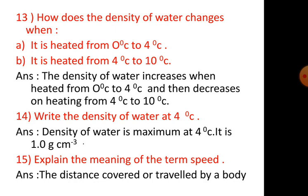Number 14. Write the density of water at 4 degrees celsius. Density of water is maximum at 4 degrees celsius. It is 1.0 gram per cubic centimeter.